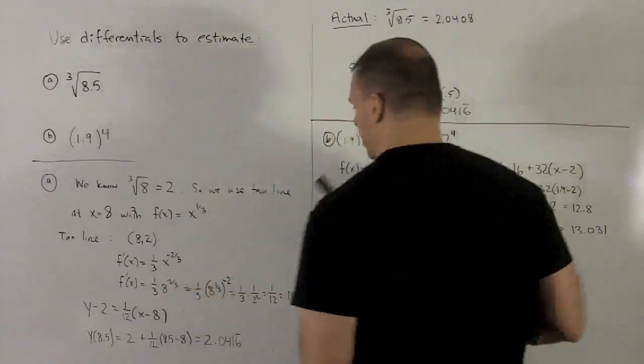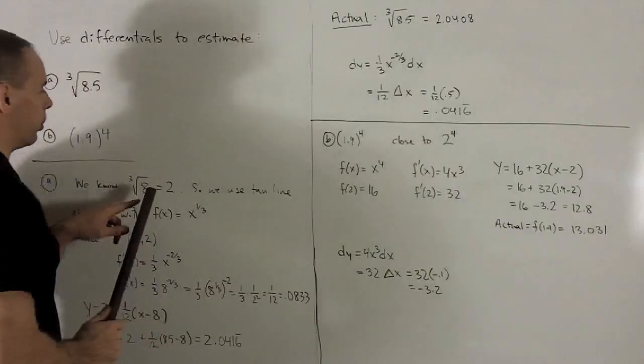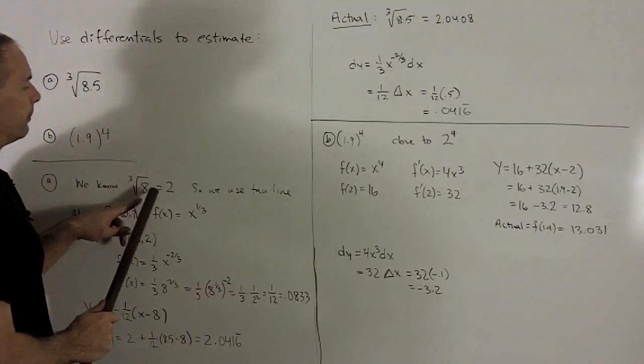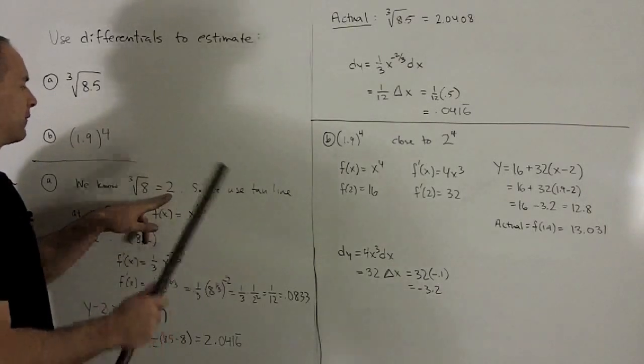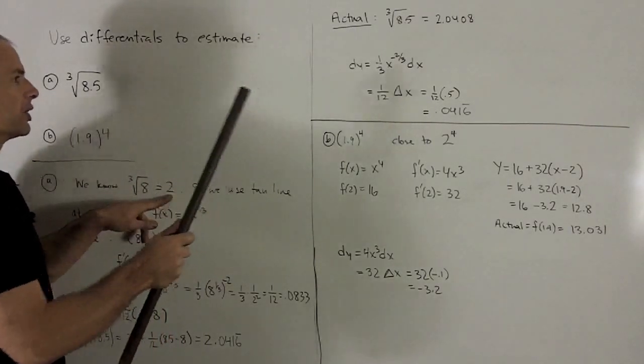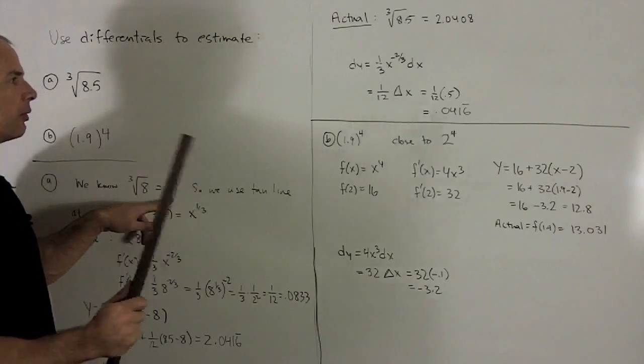So what's this? Well, note, all we did here was take the function at the nice point, evaluate it—that gives me 2—and then to get my answer, I just add the differential onto this. So it's 2 plus 0.0416 repeating.